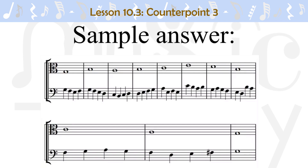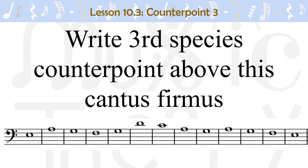Starting on the 3rd beat of the next measure, there is a nota cambiata. The 2nd and 4th notes of the nota cambiata are both dissonant and the 1st and 3rd notes are consonant. The counterpoint ends with two consonances, a passing tone and another consonance in the 2nd to last measure, and a perfect unison in the last measure.